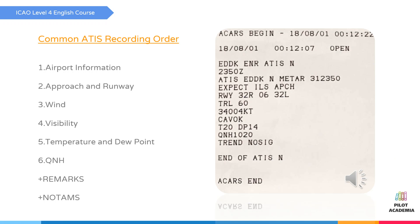Cologne information November, report time 2350. Expect ILS approach, runway 32 right and 06 and 32 left. Transition level 60. Wind 340 degrees, 4 knots. Temperature 2, dew point negative 1. QNH 1020 hectopascals. Trend: nosig. Information November.